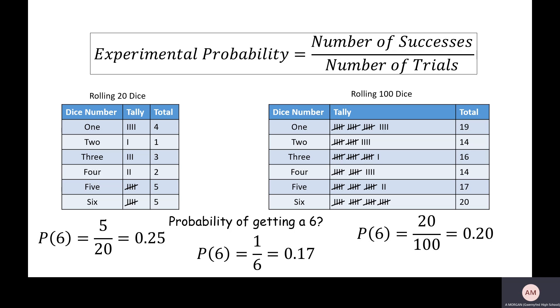So we can see the true theoretical probability is 0.17. When we only did it 20 times we were a little bit off, there's an overestimate. But when we did it 100 times we're getting closer. And you can imagine if we did it a thousand times we'd be closer again, ten thousand times closer again.